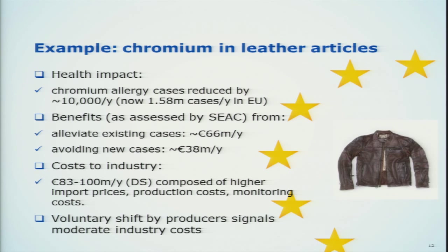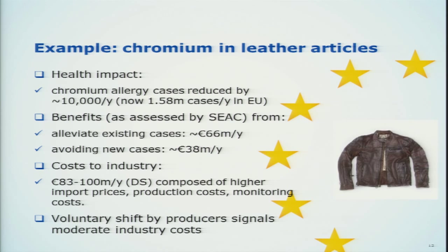As an example: chromium in leather articles. We received the restriction proposal from Denmark a couple of years ago. Here it was quite easy to estimate the health impacts because we had clinical data — about 10,000 cases could be avoided per year with this restriction. The focus was on imported leather articles, since it's not a problem with those produced in Europe. We could then monetize these benefits: health treatment costs, loss of working time, etc. — in total about 100 million euros per year. The cost to industry was actually in the same range. There was also a voluntary shift by producers already. The conclusion of the committee was that this proposal was proportional, we supported it, and it is now part of European legislation.